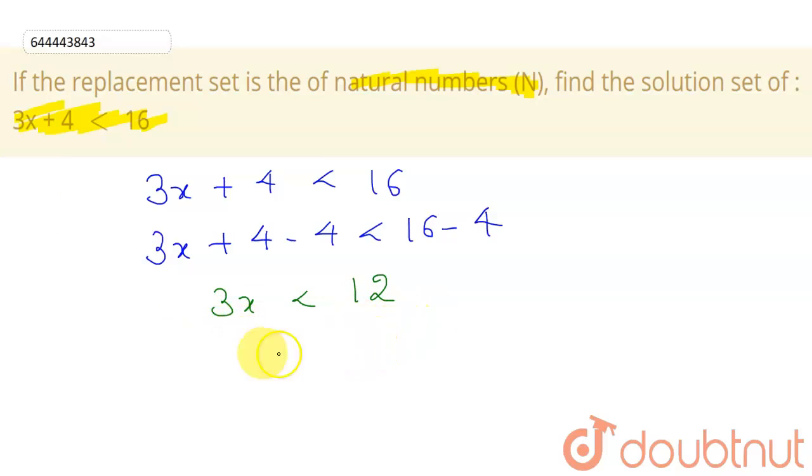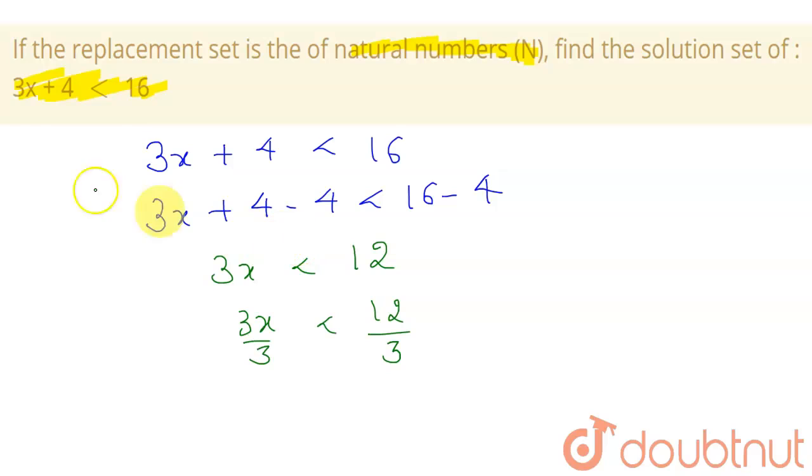Now I will divide this equation by 3. So if I divide this equation on both sides by 3, I will get this, and this will give us that our x should be less than 12 by 3, which is 4.